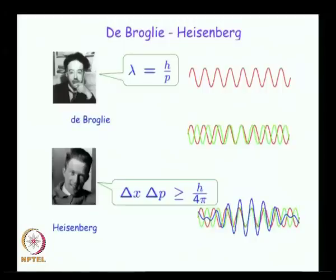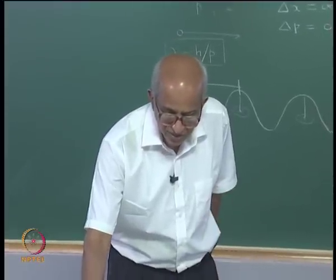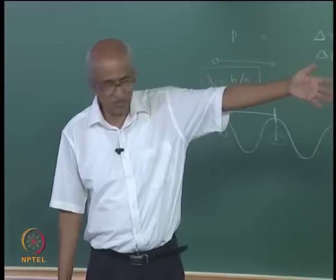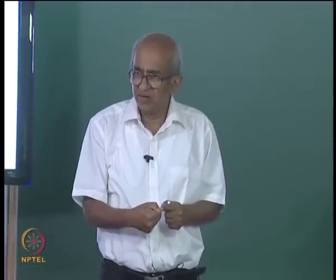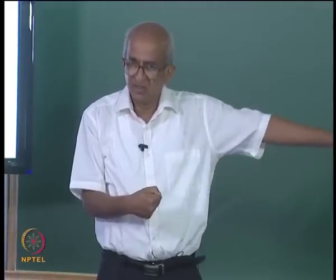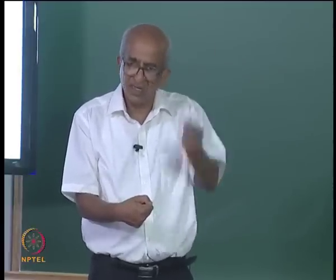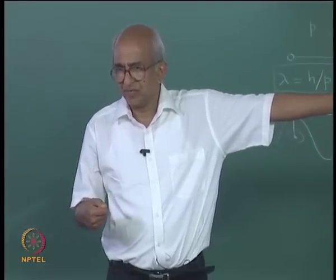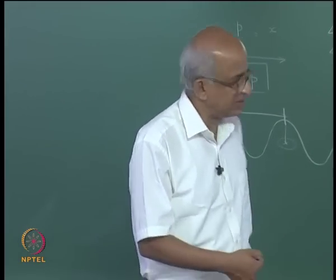This is one of the consequences of wave-particle duality. Now I want to talk about another consequence of great interest, particularly when thinking about atomic and molecular orbitals. Suppose I have a very long string, one end attached to a wall. If I stretch it tight and move my hand up and down, I produce a disturbance that travels along the string, reaches the wall, and gets reflected.